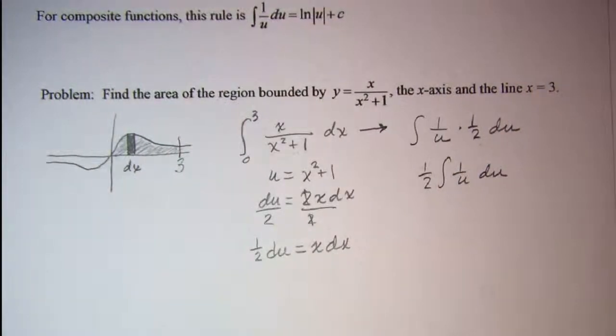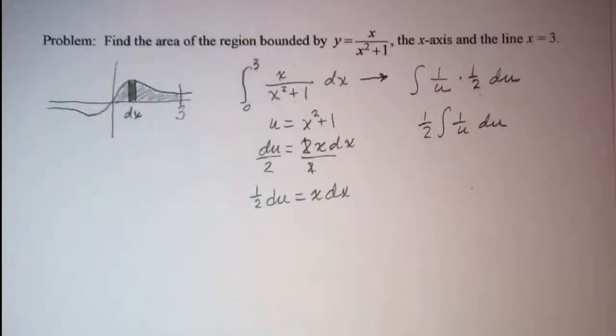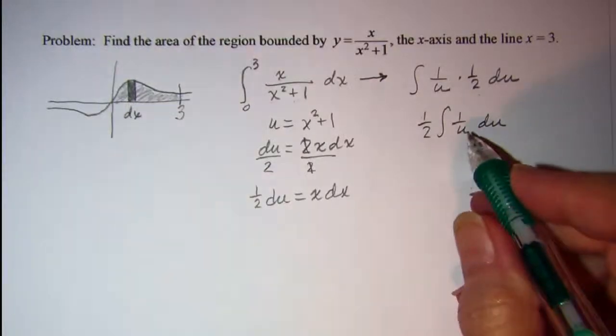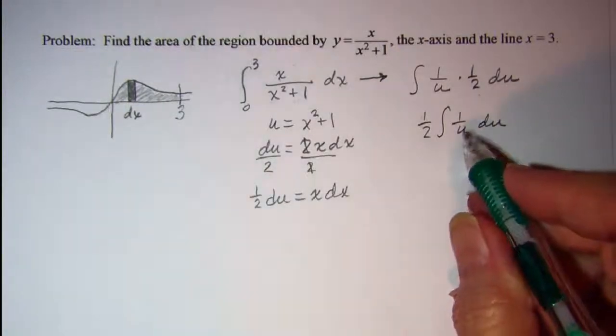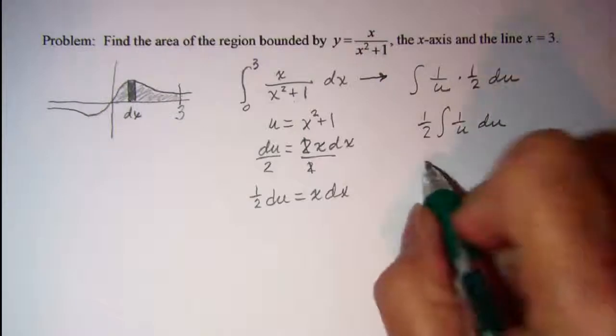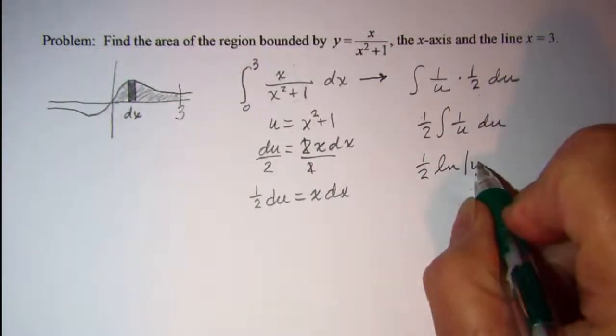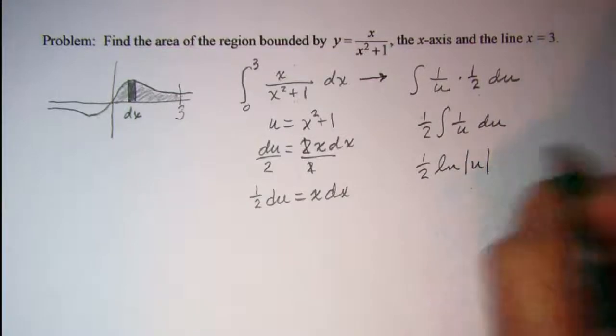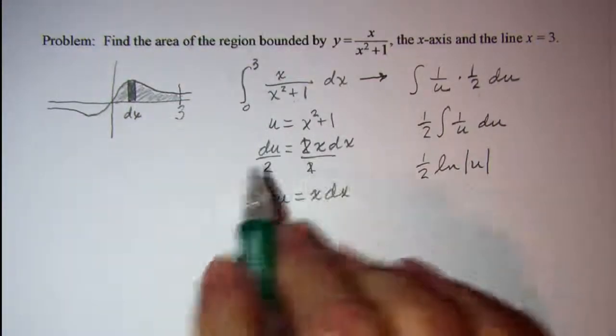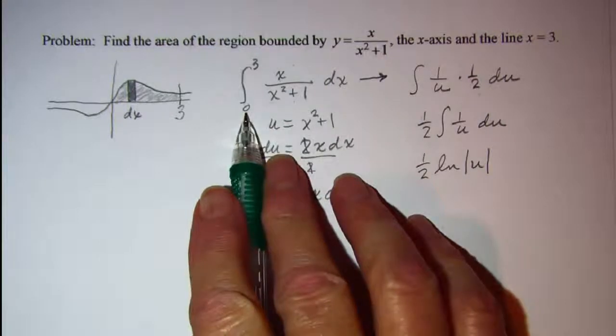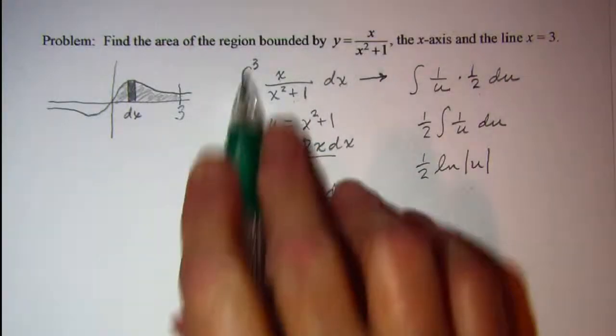And I know that this is the natural log of u or absolute value of u. And I don't need my plus constant because I have boundaries this time.